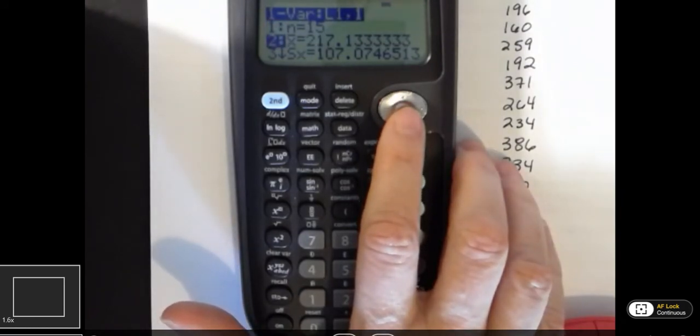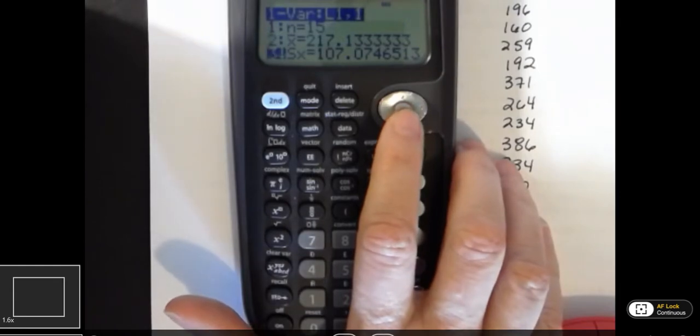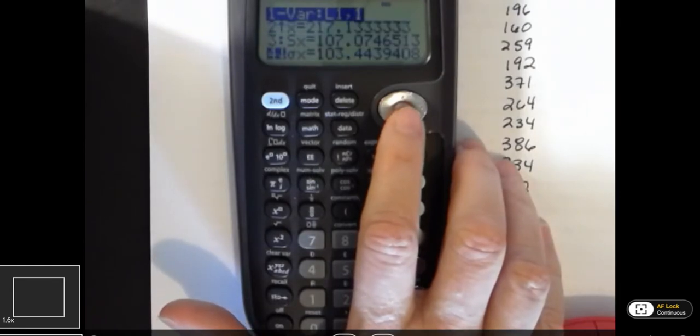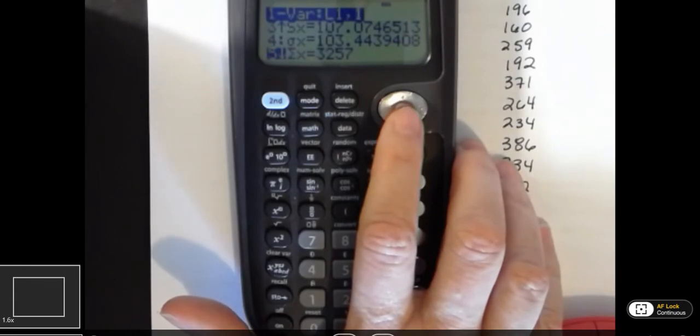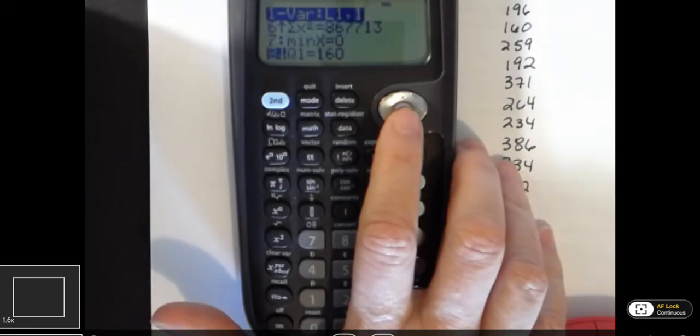whether you're talking about sample or population. We're only talking about a sample here, of course, of the flights, I think it was. And then we have the sample standard deviation, we have the population standard deviation, we have the sum of all the X or data values and the sum squared and the minimum value,